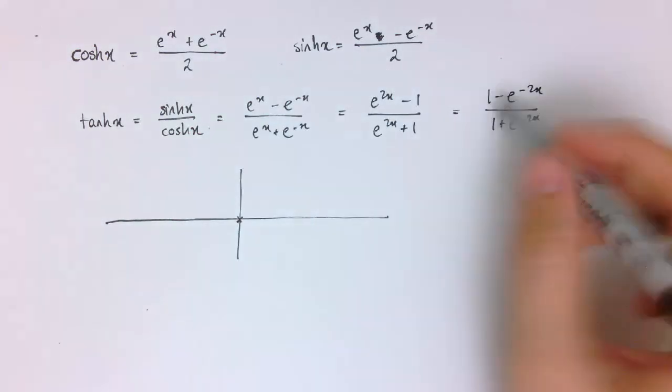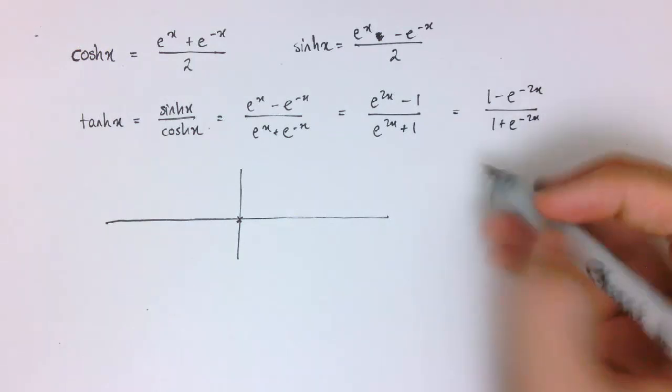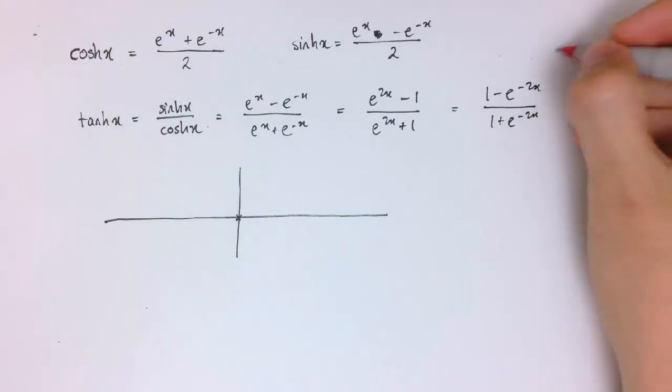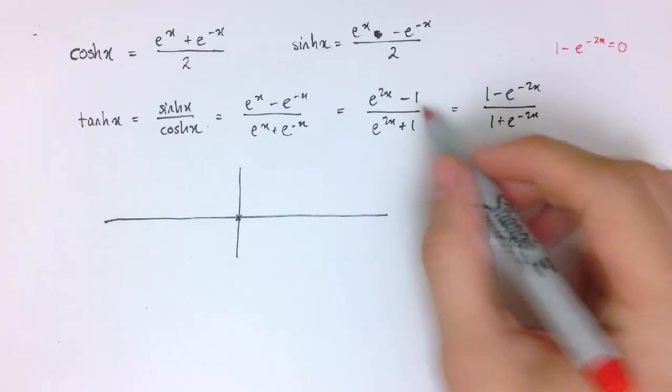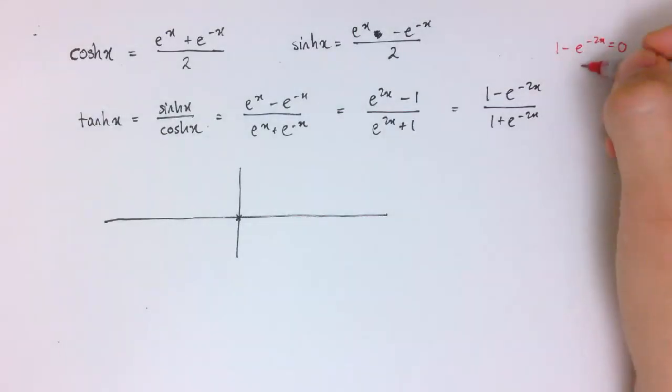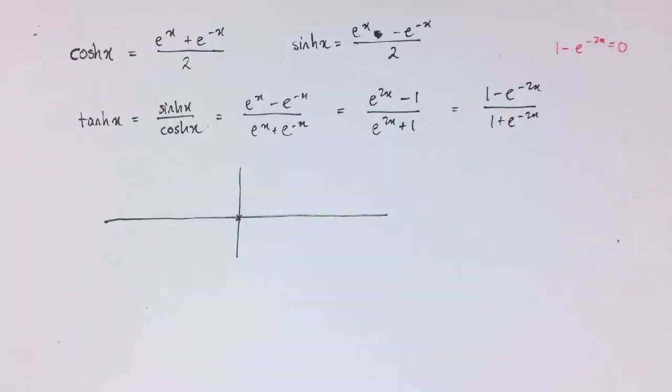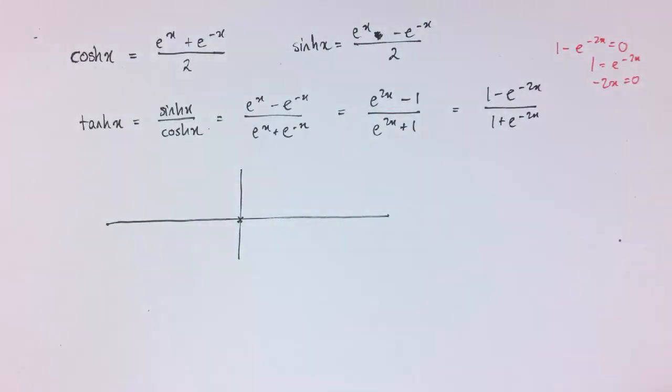If I tried to get y equals 0, I would need the numerator to be 0. So I'd have 1 minus e to the minus 2x equals 0, or e to the 2x minus 1 equals 0. Either way, we're going to find that the only solution is x equals 0, y equals 0. I get 1 equals e to the minus 2x; the only way to get this to be 1 is for the minus 2x to be 0, so x is 0.